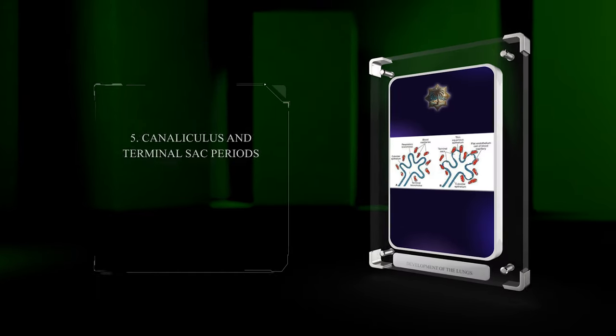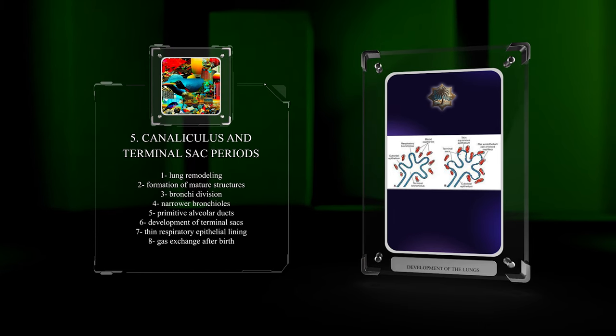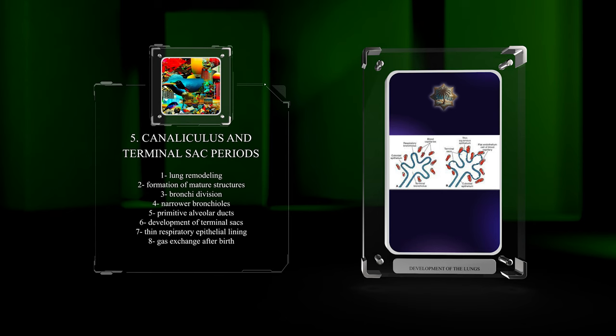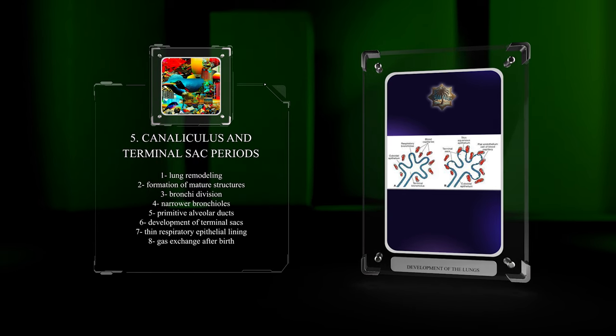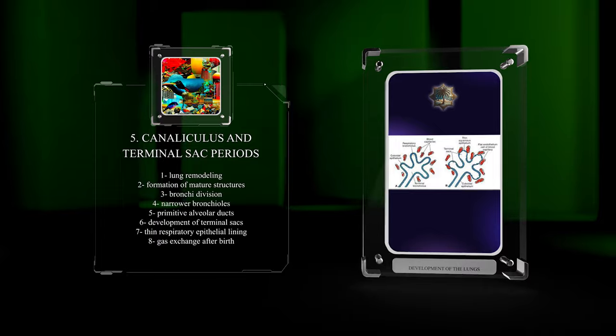Throughout the canaliculus and terminal sac periods, the lung undergoes extensive remodeling, leading to the formation of more mature structures. Bronchi continue to divide, forming narrower bronchioles and primitive alveolar ducts. Within these ducts, terminal sacs develop, and a thin respiratory epithelial lining forms. This lining plays a vital role in gas exchange after birth.